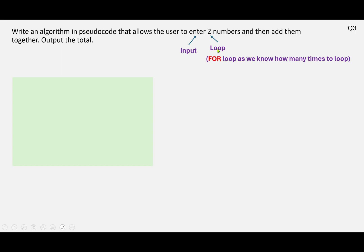And we know we can use a for loop because we know how many times that we've been asked to loop. So we can use the for loop structure for that.